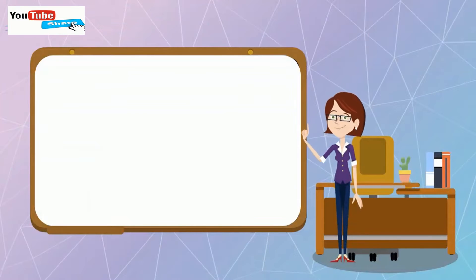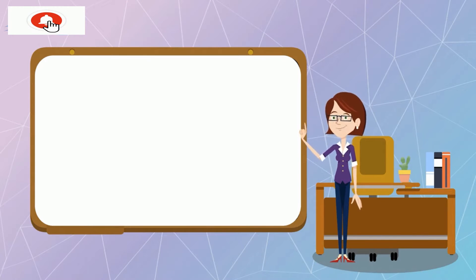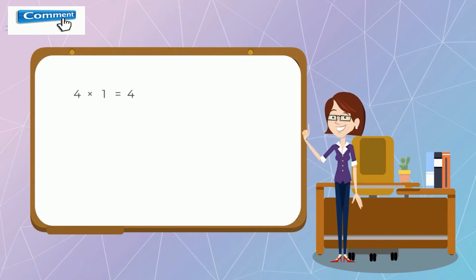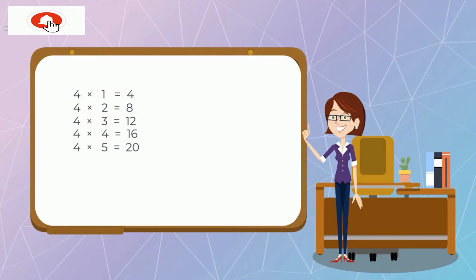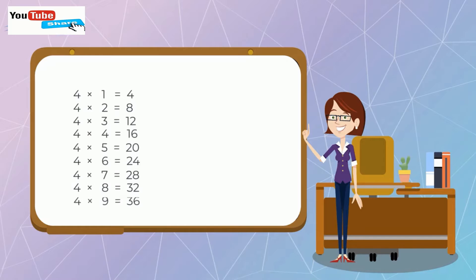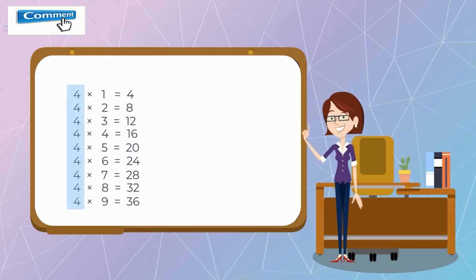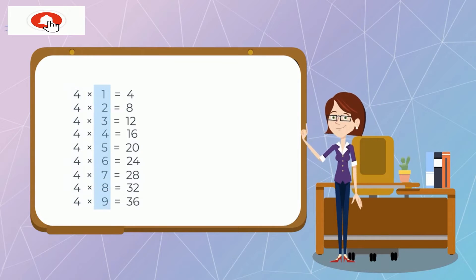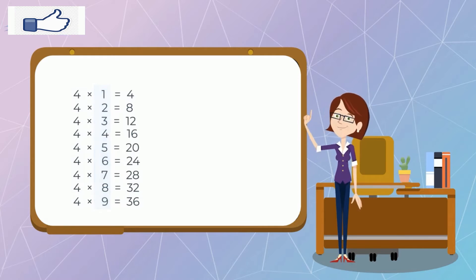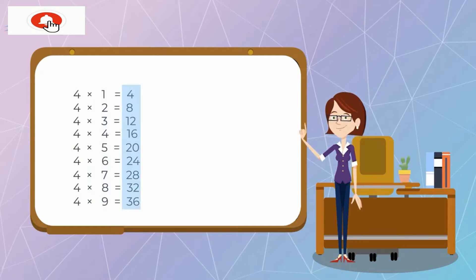Iniciaremos recordando algunos patrones en las multiplicaciones. Veamos el ejemplo de la tabla de multiplicar del 4. El multiplicando siempre es 4. El multiplicador aumenta de 1 en 1, y el producto aumenta de 4 en 4.